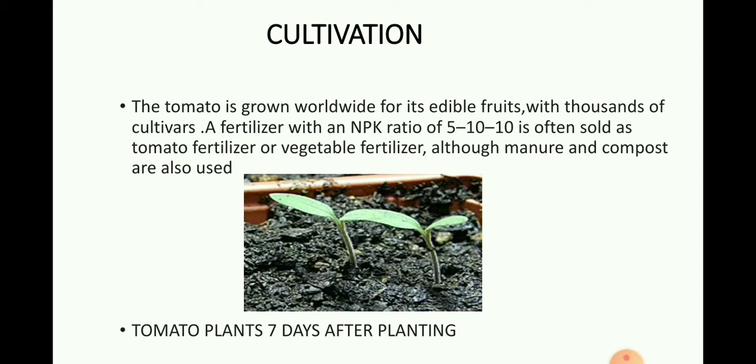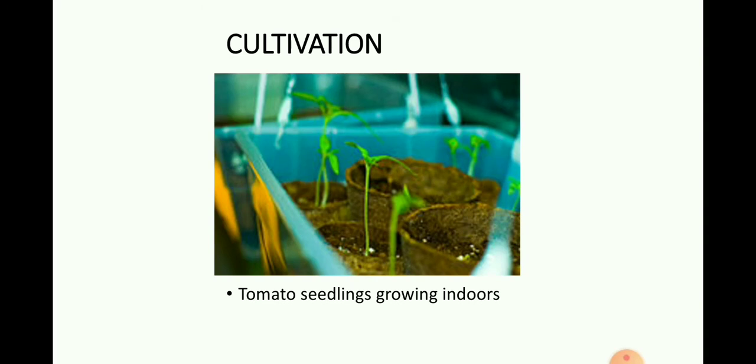Cultivation: The tomato is grown worldwide for its edible fruits, with thousands of cultivars. A fertilizer with an NPK ratio of 5 parts nitrogen, 10 parts phosphorus, and 10 parts potassium is often sold as tomato fertilizer or vegetable fertilizer. Manure and compost are also used. This is the tomato plant seven days after planting, and tomato seedlings growing indoors.